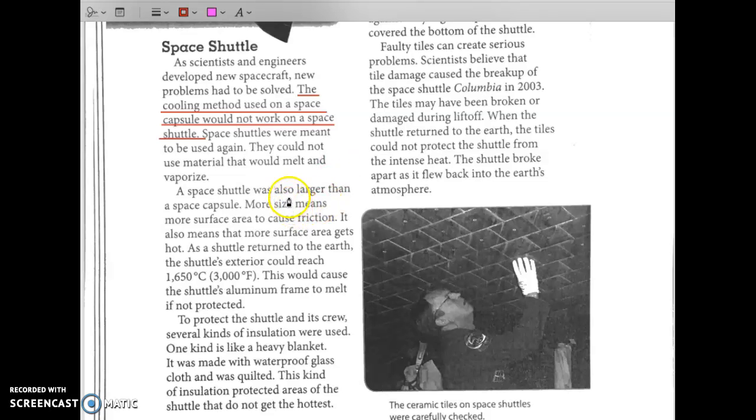A space shuttle was also larger than a space capsule. More size means more surface area to cause friction. So probably heat up even more. It also means that more surface area gets hot. As a shuttle returned to the earth, the shuttle's exterior could reach 1650 degrees Celsius. This could cause the shuttle's aluminum frame to melt if not protected. Oh no.